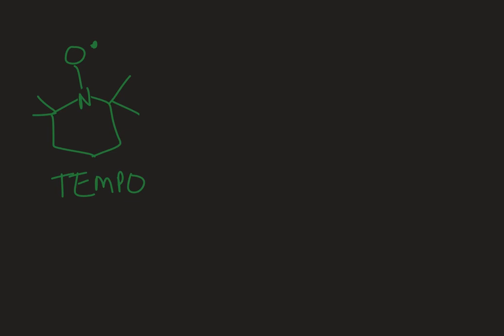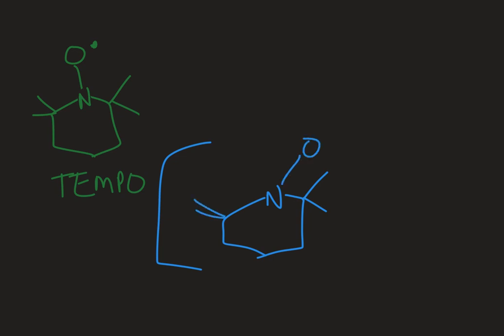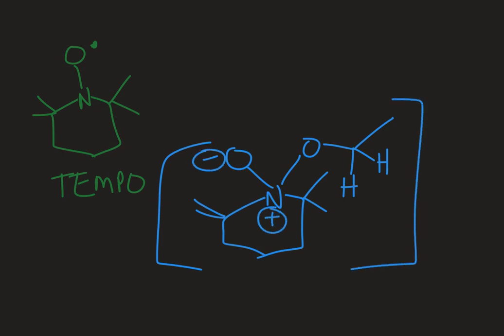In the upper left-hand corner is the structure of TEMPO — it's a catalyst that helps facilitate the reaction. What ends up happening is you get an intermediate where TEMPO, specifically the nitrogen in TEMPO, is attached to your alcohol. This is the intermediate I see when TEMPO has attached to the oxygen in my alcohol. This chunk is my alcohol — that is what attached to the nitrogen.